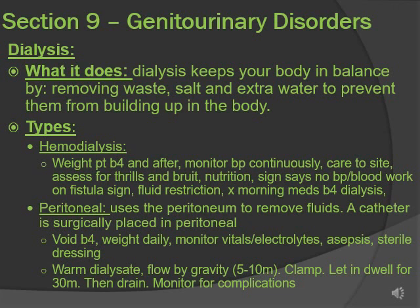Peritoneal dialysis is through the peritoneum — the abdominal cavity — to remove fluids. A catheter is placed surgically in the peritoneum. Tell the patient to void before, weigh them daily, monitor vitals and electrolytes, and use aseptic technique with sterile dressing. During the procedure: warm up the dialysate, let it flow by gravity for 5 to 10 minutes, then clamp it and let it dwell for 30 minutes, then open it and drain. Monitor for complications.